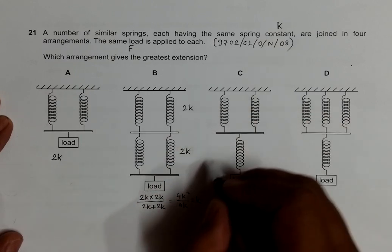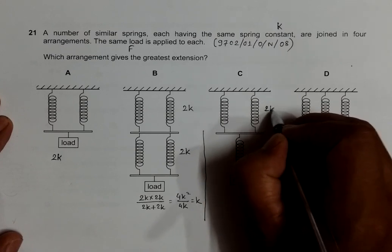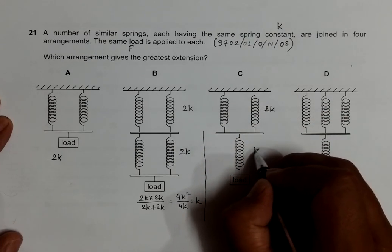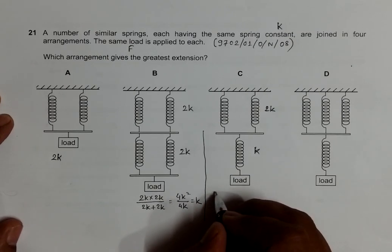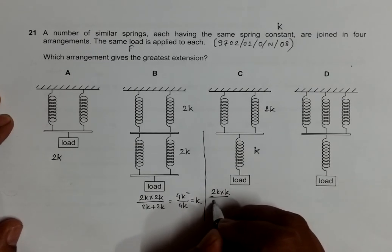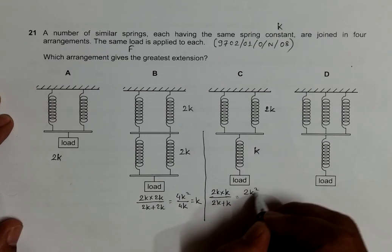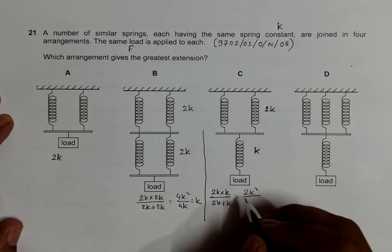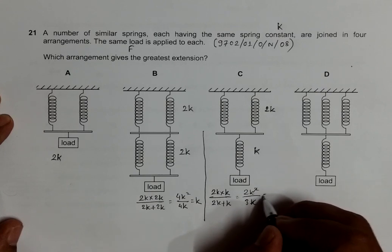For arrangement C, we have K and K which is 2K, and this is K. This K and 2K are in series, so it should be equal to 2K times K divided by 2K plus K. So it should be 2K squared, and then we have 3K. So K and K gives us 2K divided by 3.